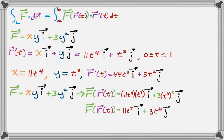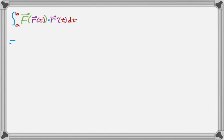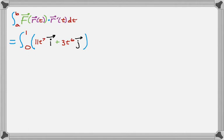Now we have everything we need. The general process is the integral from a to b of f of r of t dot r prime of t dt. Here a and b are 0 and 1. We calculated f of r of t to be 11t⁷·i plus 3t⁶·j, and we dot product that with r prime of t, which is 44t³·i plus 3t²·j, and all of that is dt.